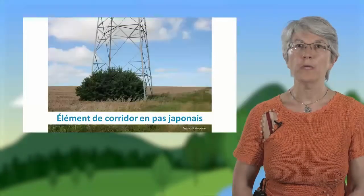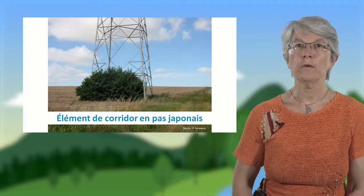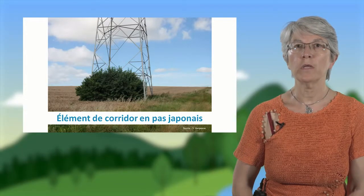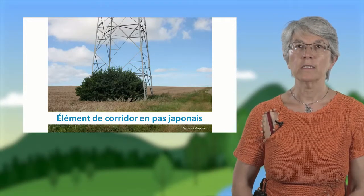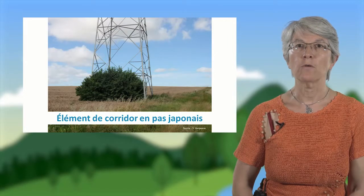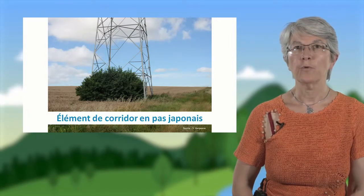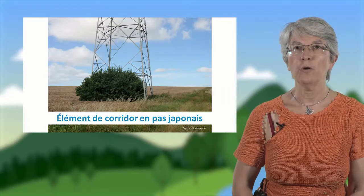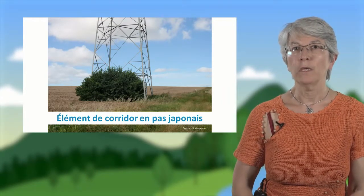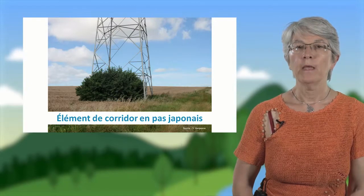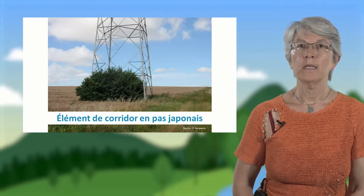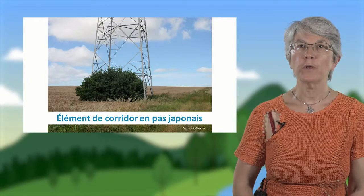En pas japonais, on a des petites zones d'habitat favorables à certaines espèces qui sont espacées dans une matrice plus défavorable. C'est un exemple de petits bosquets au pied de pylône, mais on peut avoir des landes ou des clairières en forêt. Ces éléments vont être suffisamment proches pour que les espèces puissent aller de l'un à l'autre.